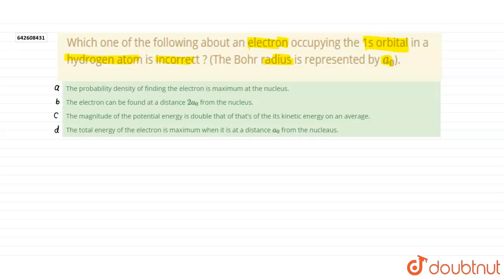The probability density, probability density of finding the electron is maximum at the nucleus. The electron can be found at a distance 2A0 from the nucleus, option B.